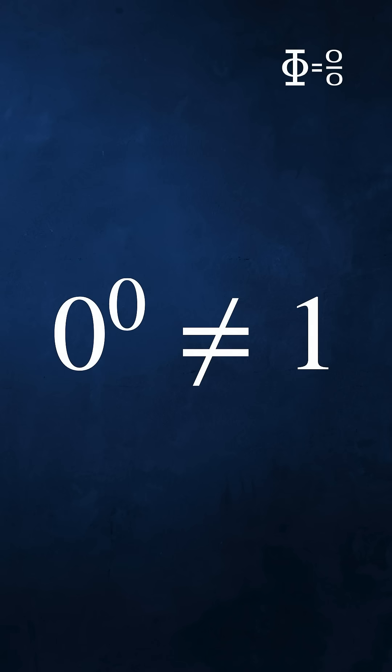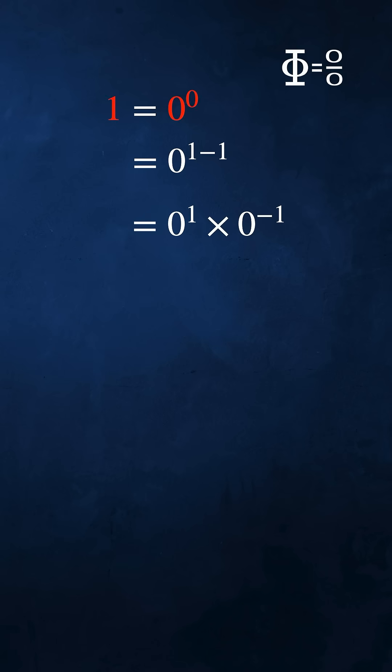0 to the power 0 is not equal to 1 because if we let 1 equal 0 to the power 0, then 0 equals 1 minus 1. 0 to the power 1 minus 1 equals 0 to the power 1 times 0 to the power minus 1.